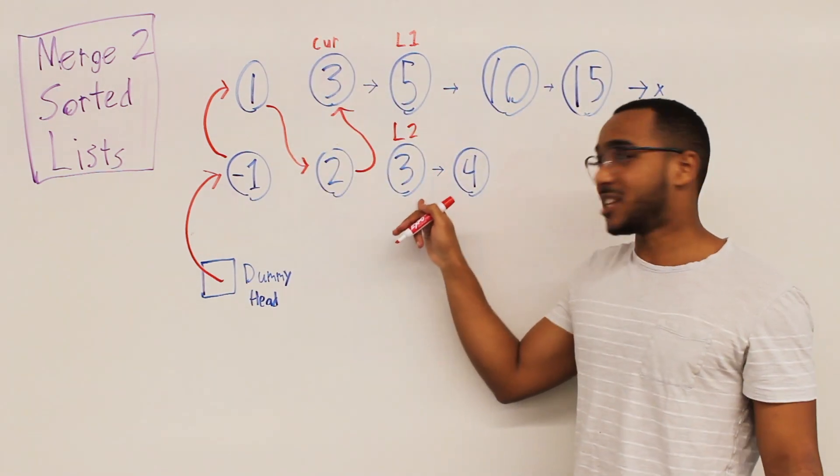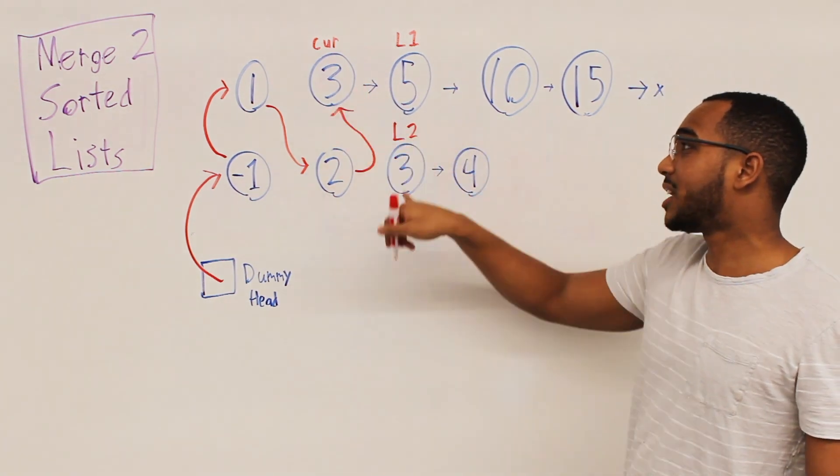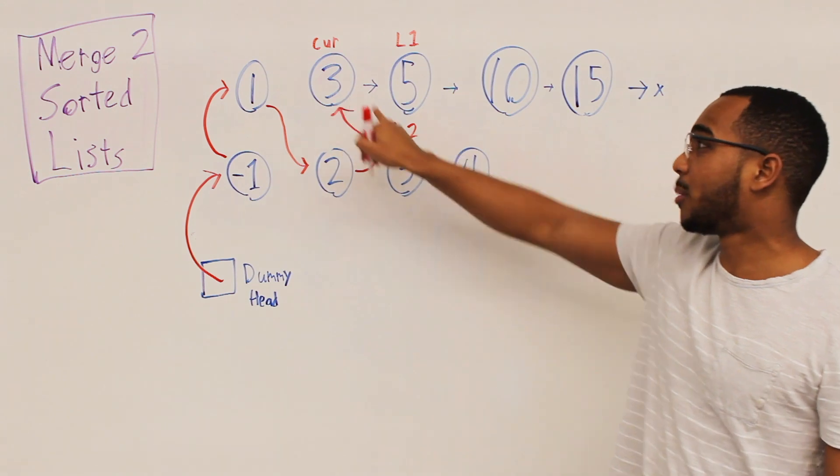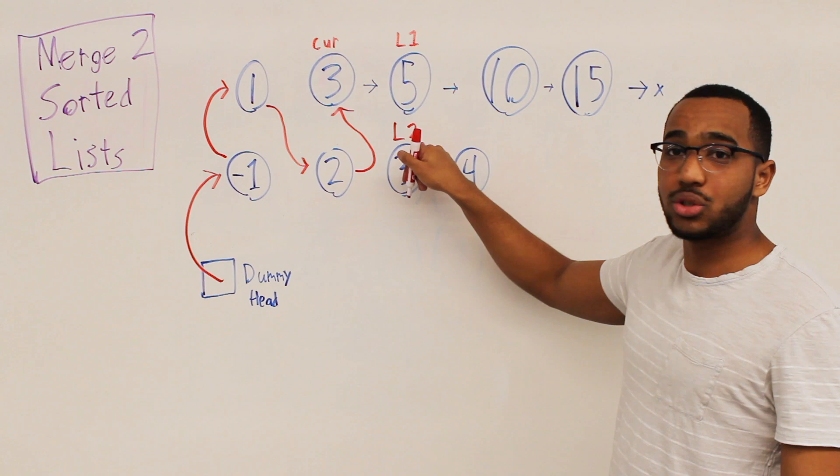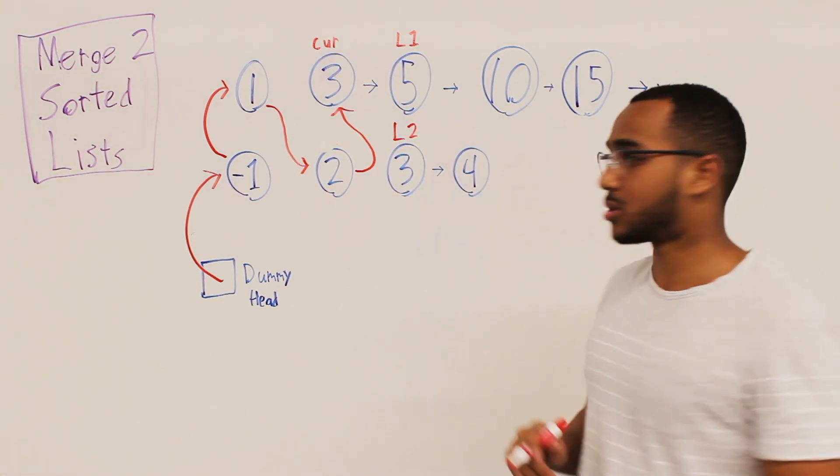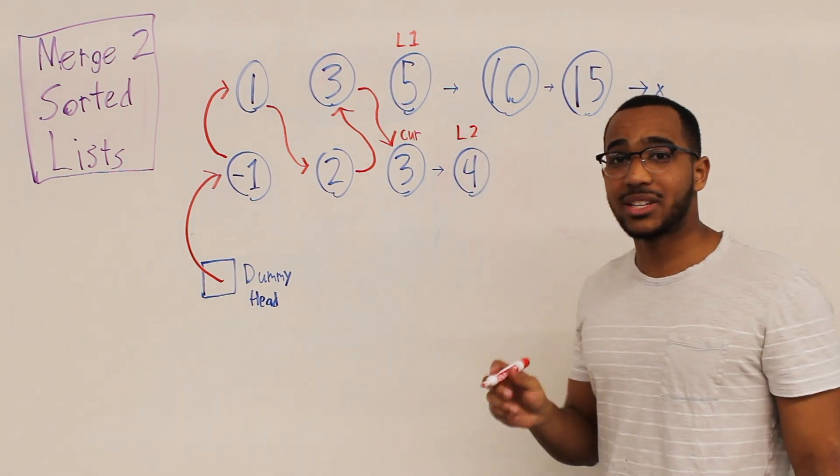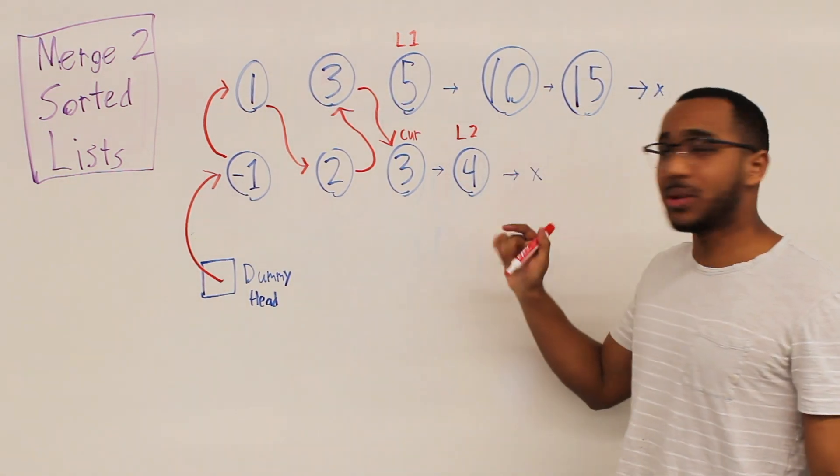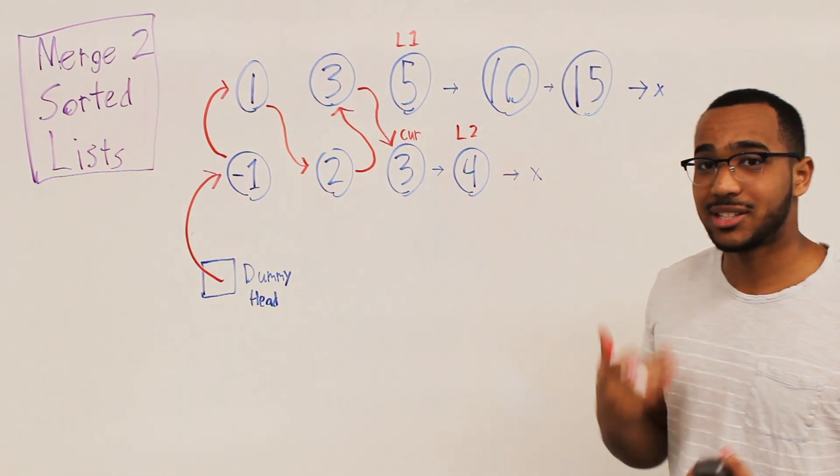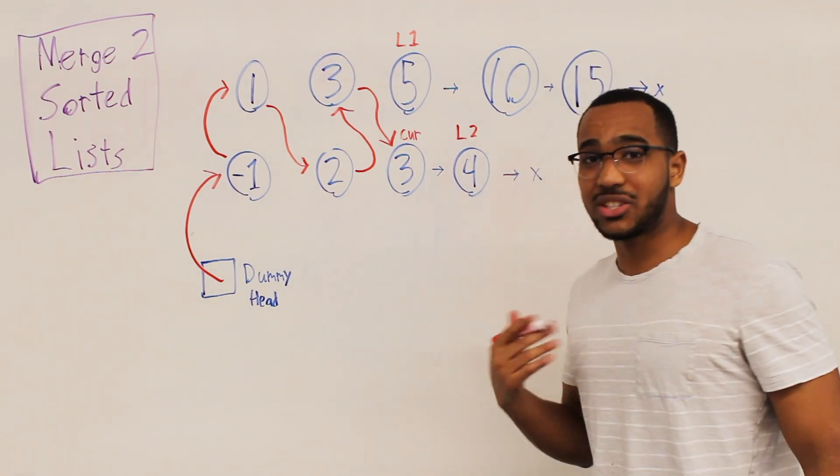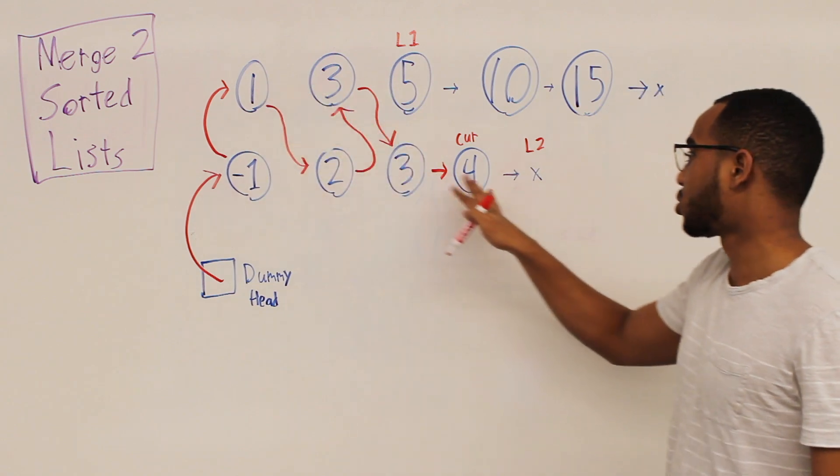So now comparison. Three gets the placement. Three versus five. Three is the winner. So now cur points over here. This arrow gets erased. Cur points over here. And then cur hops onto what it just pointed to. And L2 needs to advance because we just ate one of its nodes. And so now what we do is we look at L1 and L2. Who is the winner? The winner is L2. L2 gets the placement. We point cur to where L2 was. And we move cur to the tail of the list we're building. Which is the node that it is about to point to?